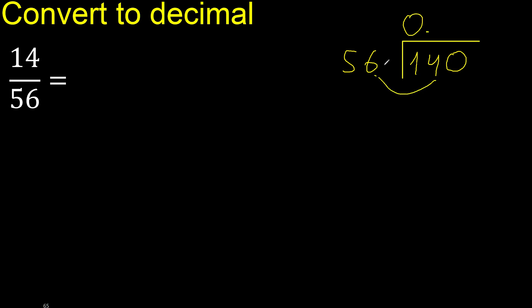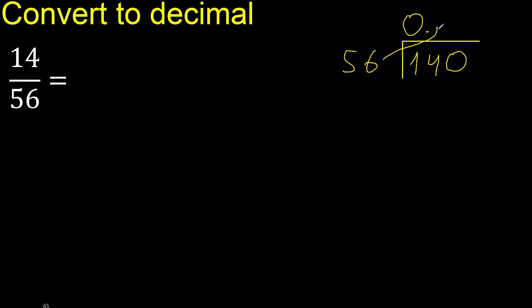56 multiplied by which number is nearest to 140 but not greater? Multiplied by 3 is greater; multiplied by 2 is 112. Subtract — remainder is 28.